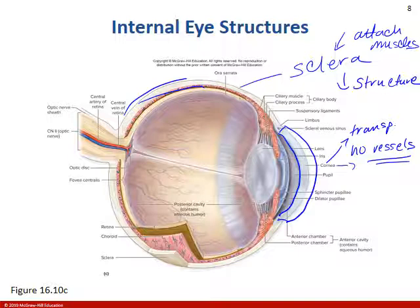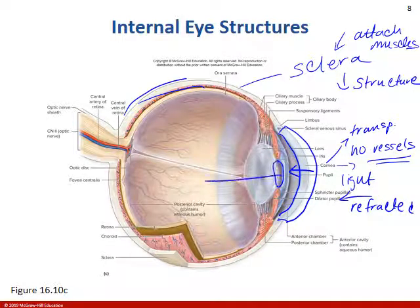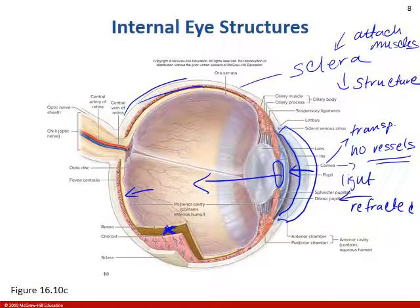The cornea is the first structure in the eye where light is going to be refracted. The light travels through the cornea and is going to be focused through the pupil opening, and must make its way all the way back to the retina.